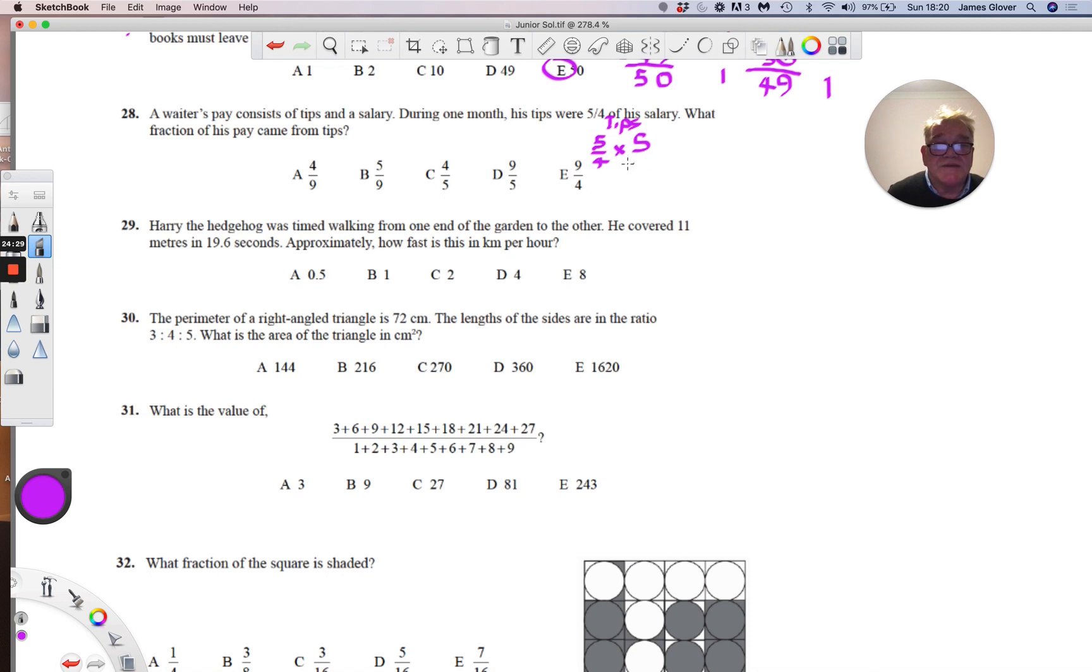So his total salary, sorry, his total pay will be his salary plus the tips. Salary plus tips. And so we've got a salary plus 5 fourths of the salary which gives 9 fourths of salary. 9 fourths of salary is equal to his pay. And so four ninths of his pay came from, the salary is four ninths of his pay. So five ninths is from tips. I hope I've got that right.